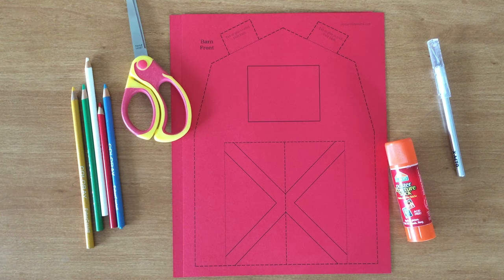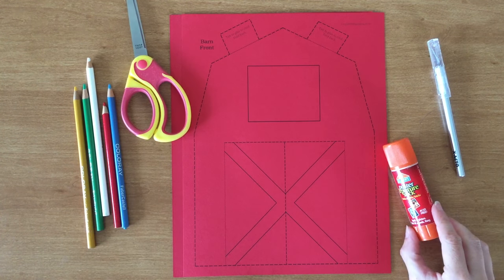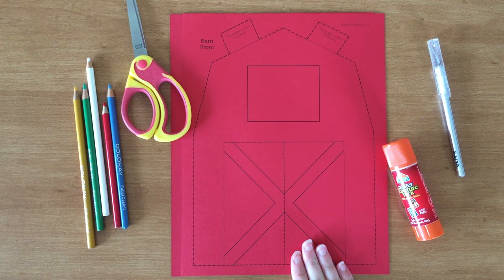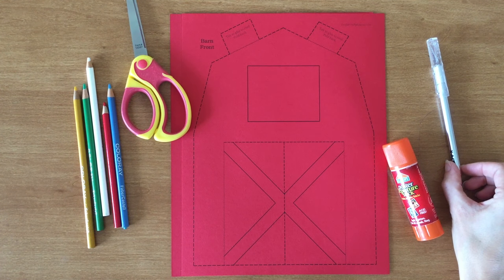To make a barn, you'll need something to color or paint with, scissors, a glue stick, and six sheets of paper cardstock. If you have an exacto knife that an adult can use, that would also be helpful.